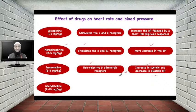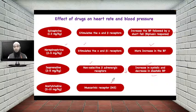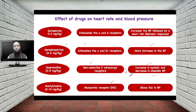The fourth drug is acetylcholine. Acetylcholine acts on muscarinic receptors. There are three types of muscarinic receptors: M1, M2, and M3. M3 receptors are present in the heart, and acetylcholine acting on M3 receptors produces a sharp fall in blood pressure. Now, with the help of the software, let's study the effects of epinephrine, norepinephrine, isoprenaline, and acetylcholine.